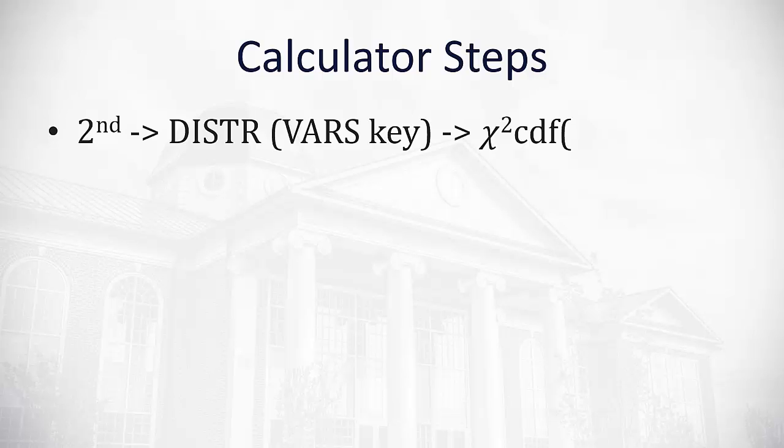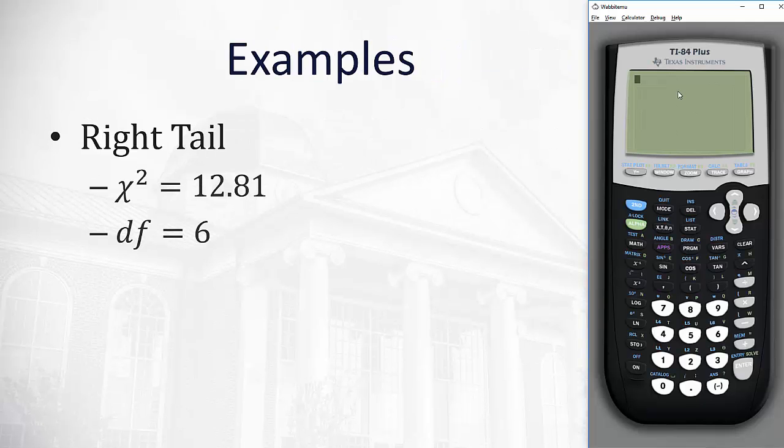To access the chi-squared distribution, hit Second, Distribution (which is on the Vars key), and then select Chi-squared CDF. Once Chi-squared CDF is entered in the calculator, type in the lower limit, the upper limit, and the degrees of freedom, separated by commas.